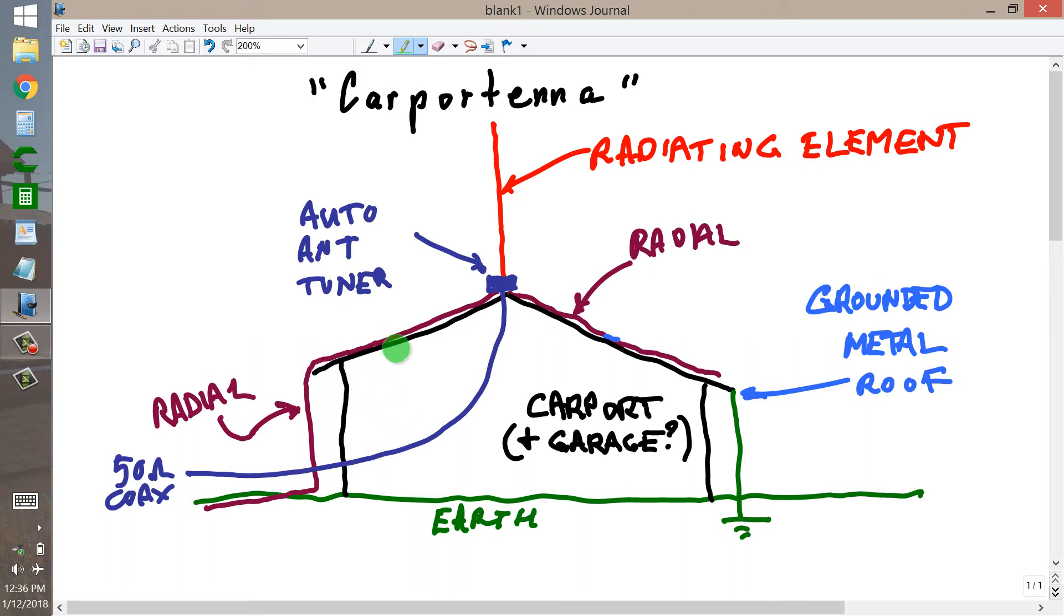What matters is that it has a grounded metal roof and he wanted to know some of my design ideas for an HF multiband vertical. HF meaning high frequencies, presumably 80 meters and up, 80 meters and shorter wavelengths, although maybe 40 meters and shorter wavelengths would be more realistic in most circumstances.